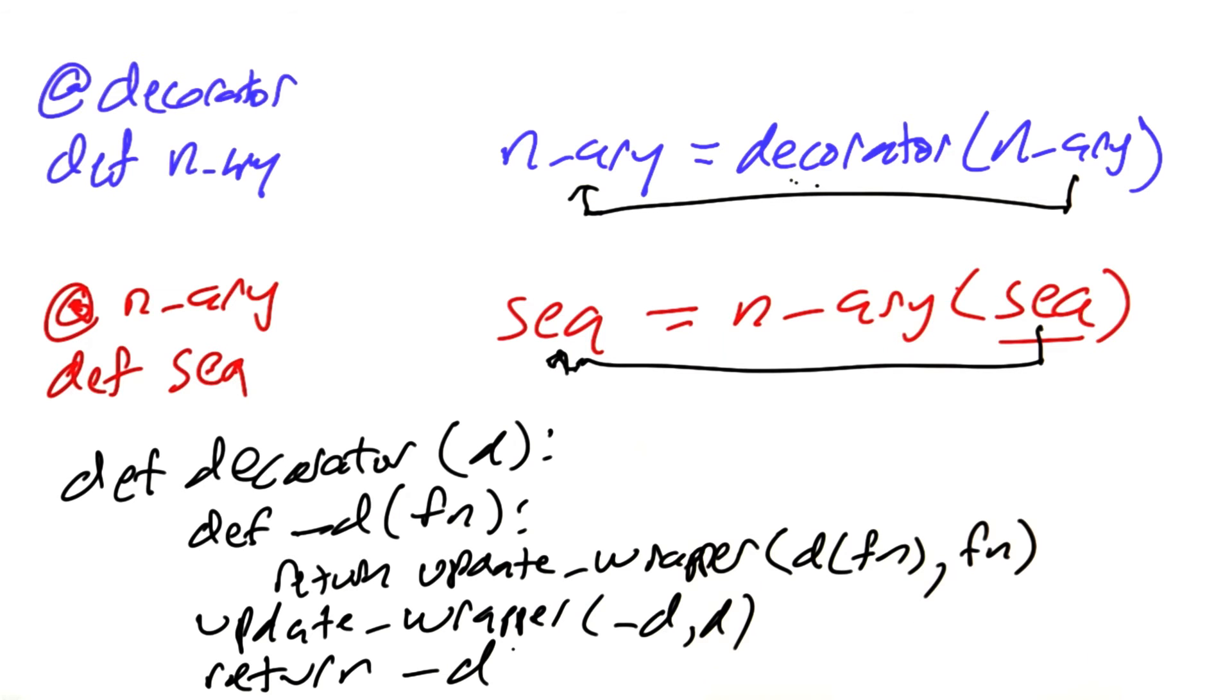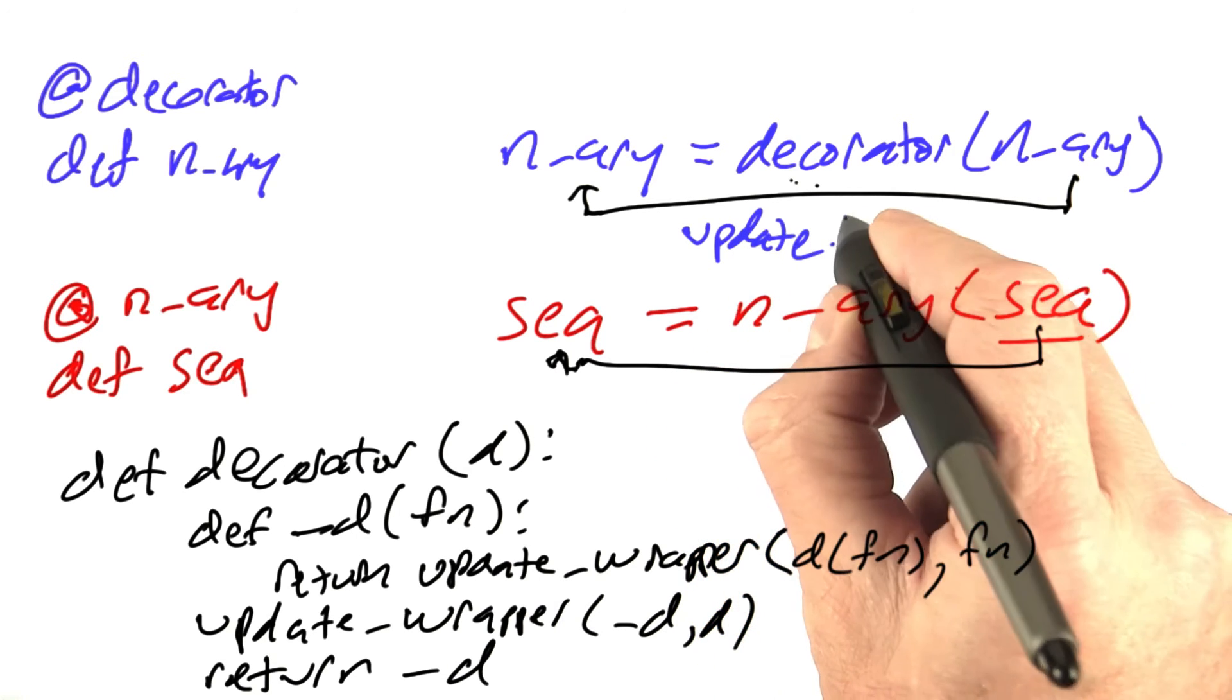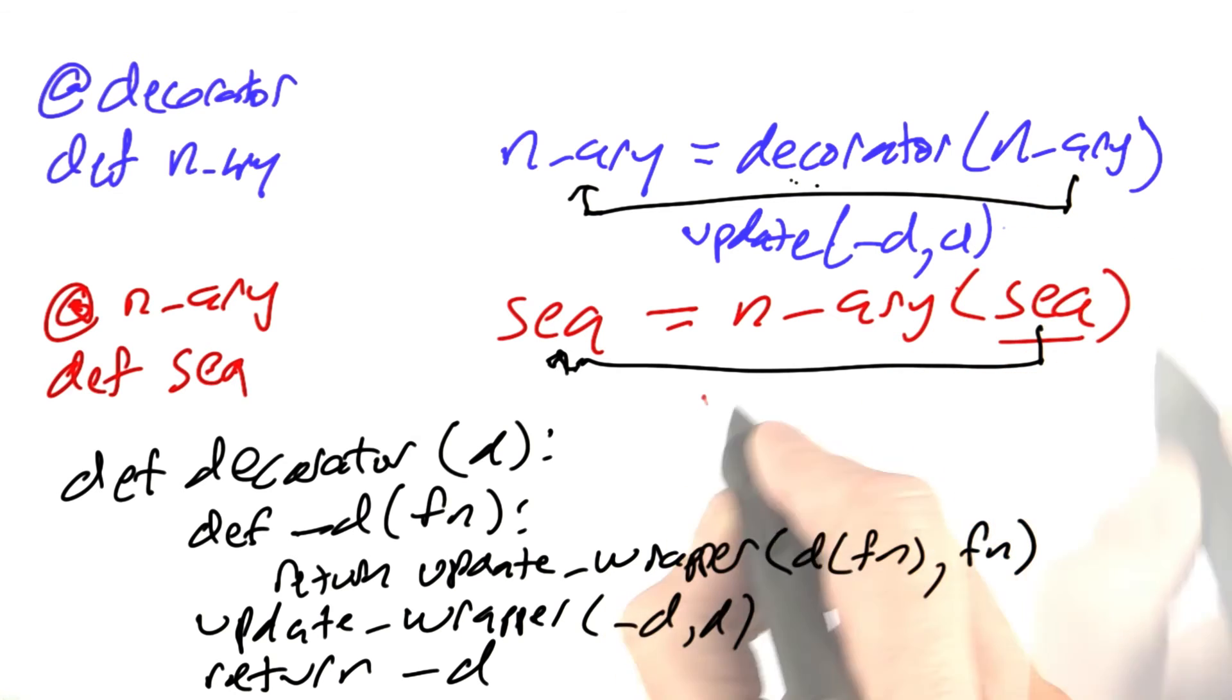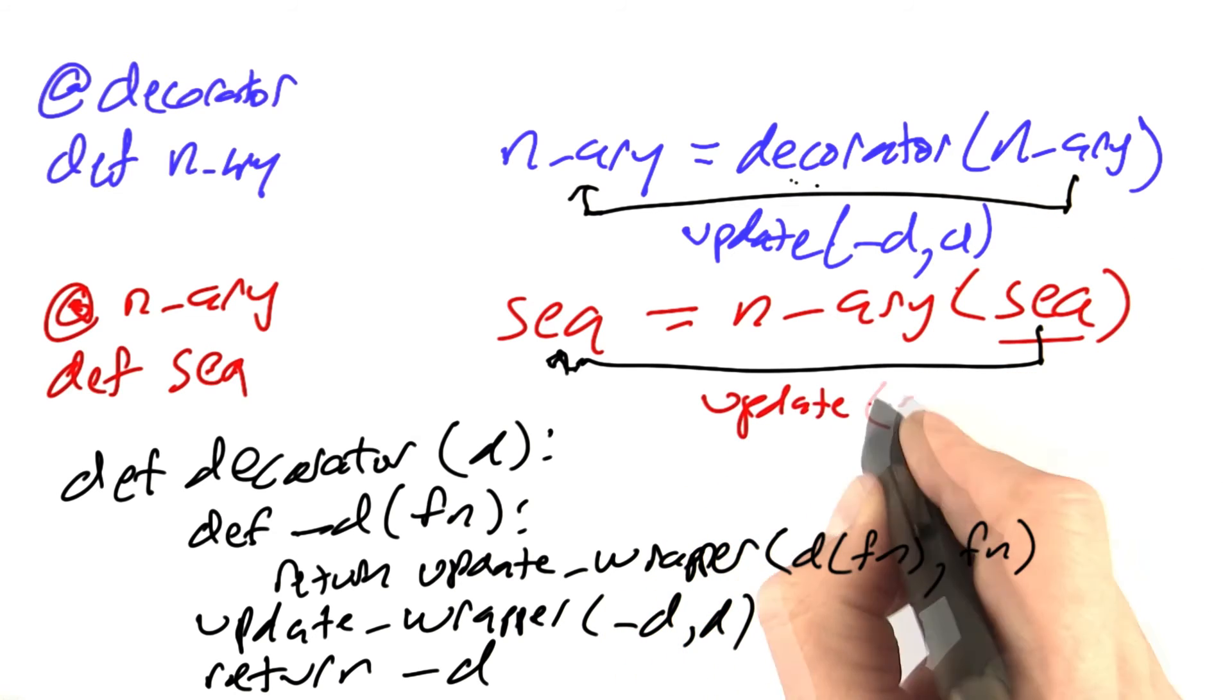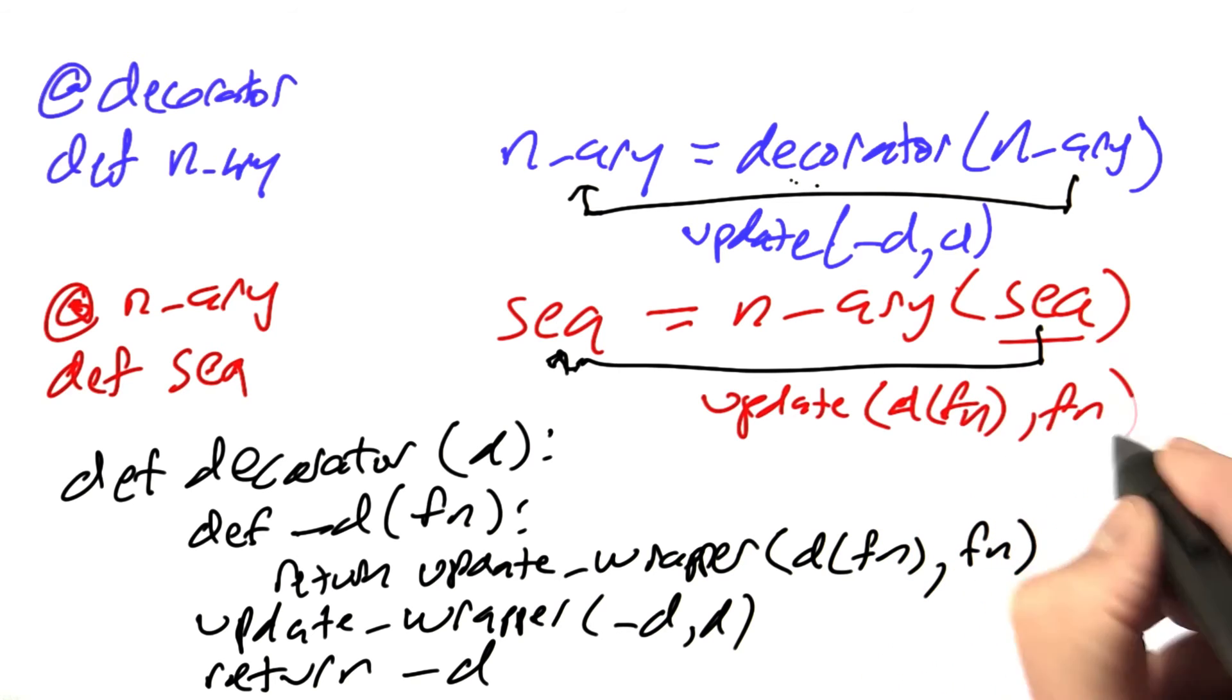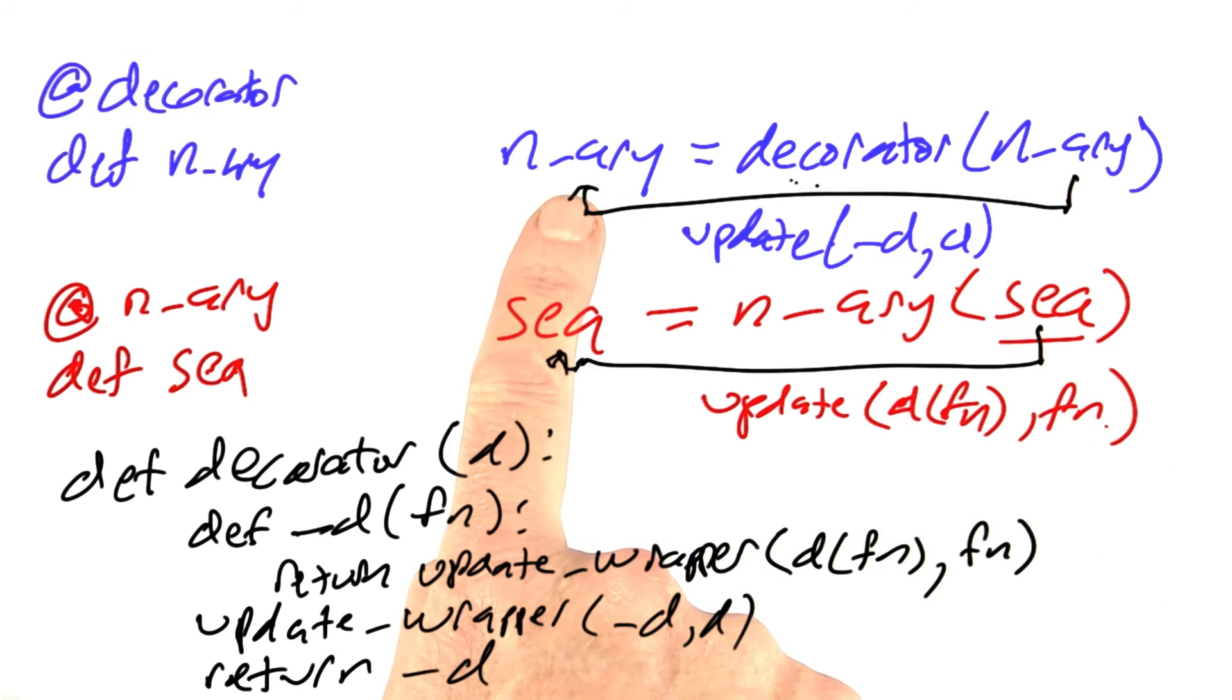Now, which update is which? This one here is the update of underscore d with d, and this one is the update of the decorated function from the function. Here we're saying the new nary that we're defining gets the name from the old nary, the name in the documentation string, and here we're saying the new sequence, the new nary sequence, gets its name from the old sequence.